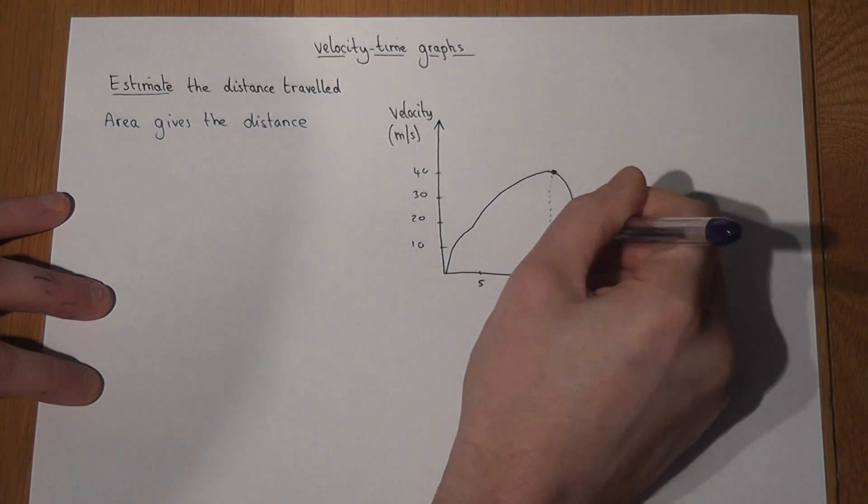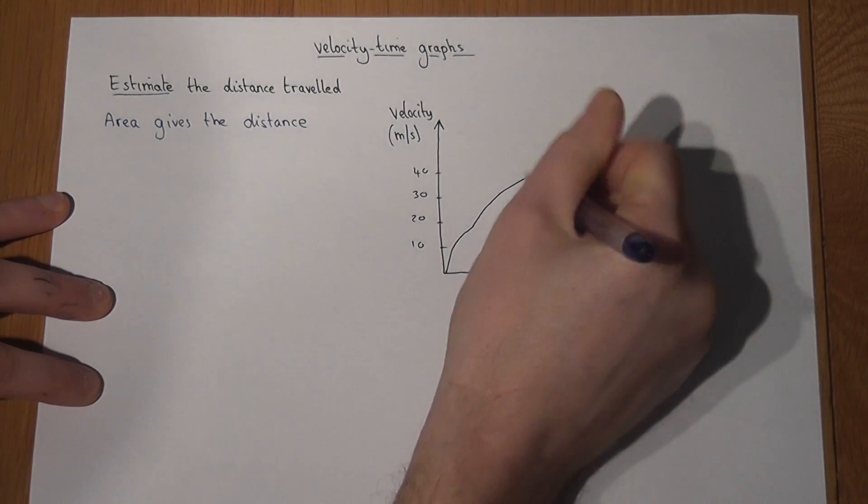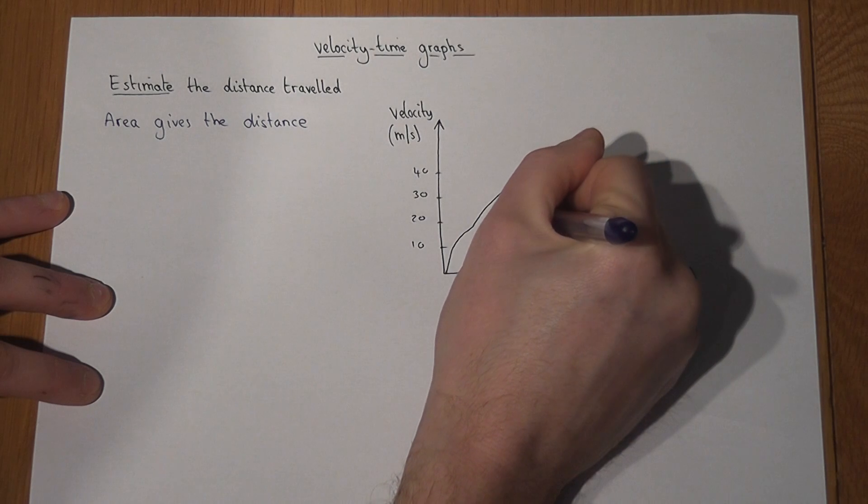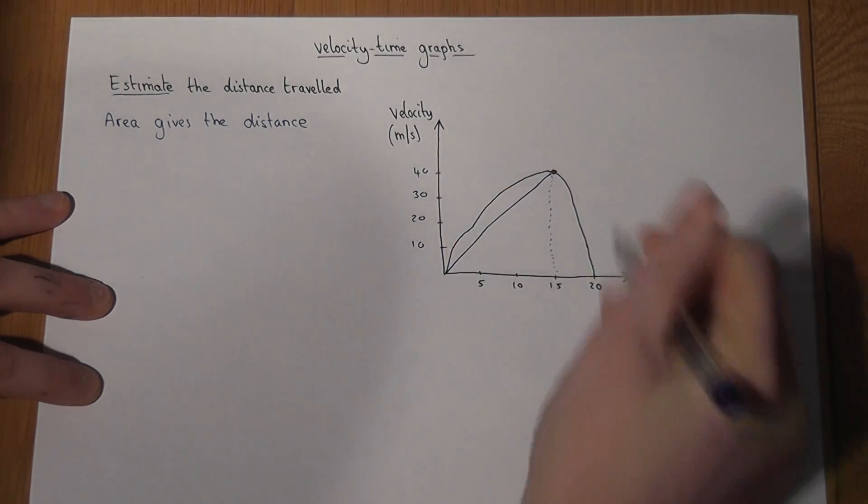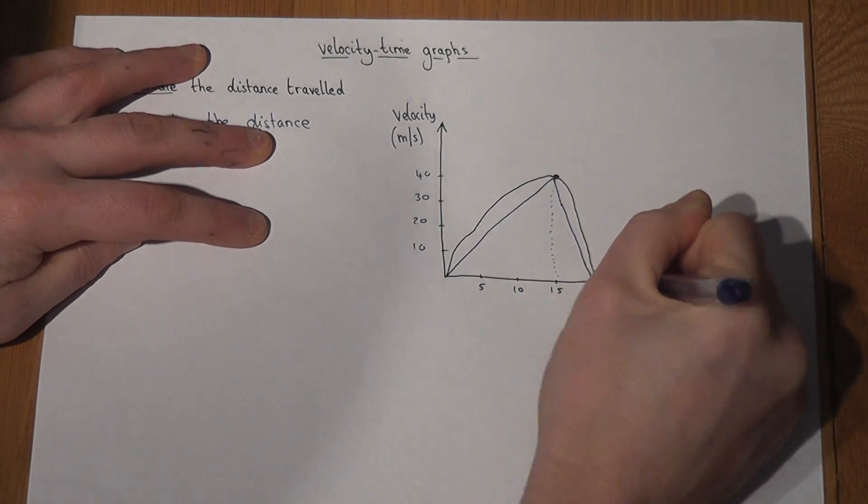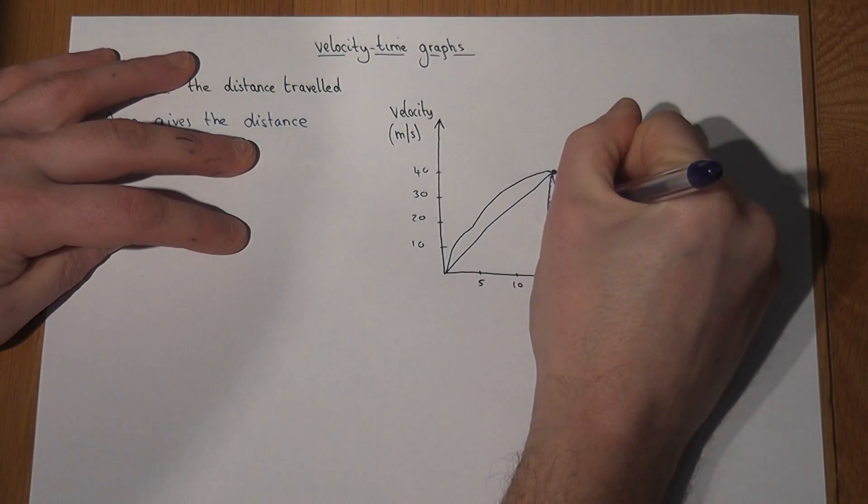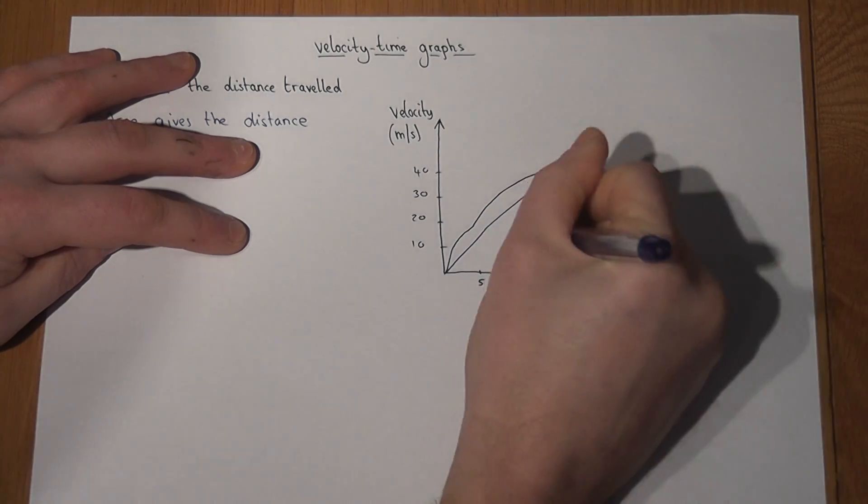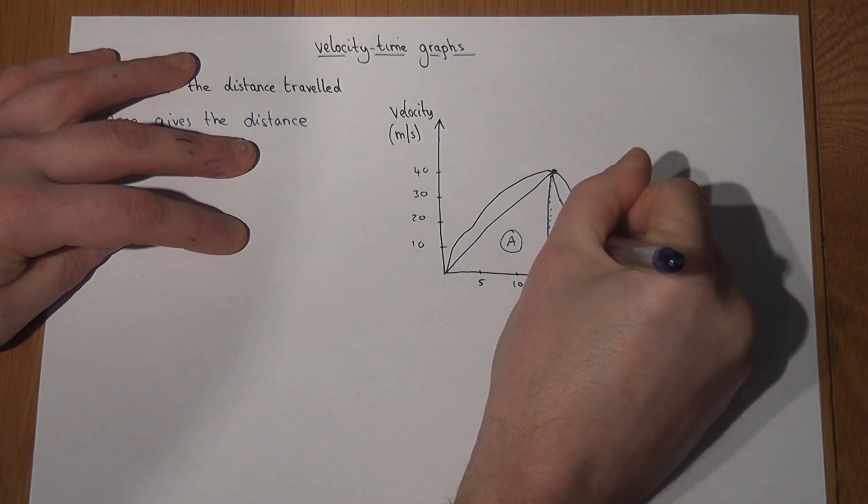You could use lots of different options here, but I'm going to call this shape one triangle to the left and then one triangle to the right. I'm going to draw a line down here and I've got triangle A and triangle B.